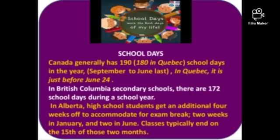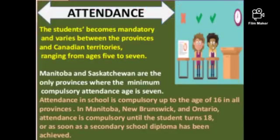Student attendance is mandatory and varies between provinces and territories, ranging from ages five to seven. Manitoba and Saskatchewan are the only provinces where the minimum compulsory attendance age is seven. Attendance is compulsory up to age 16 in all provinces. In Manitoba, New Brunswick, and Ontario, attendance is compulsory until the student turns 18 or earns a secondary school diploma.